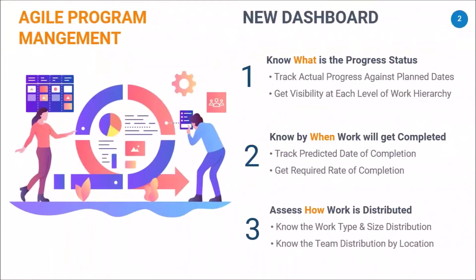Today we'll be looking at the new agile program dashboard capability released in CIF 7.5. It helps you monitor the progress of your agile programs effectively and provides key insights on how the program is progressing in terms of scope and timeline commitments. It also provides visibility of the distribution of different work types and team members to help you assess ways to mitigate any slippage risk.